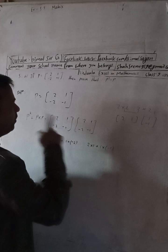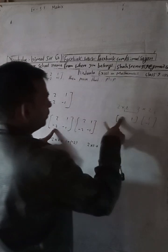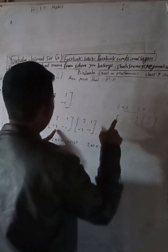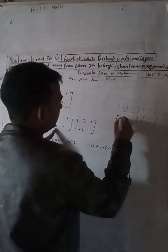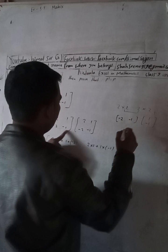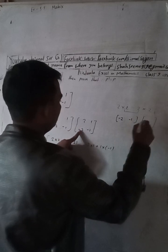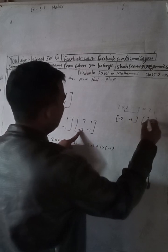Now change to the second row: minus 2, minus 1, with entries 2, minus 2 and 2, minus 2.